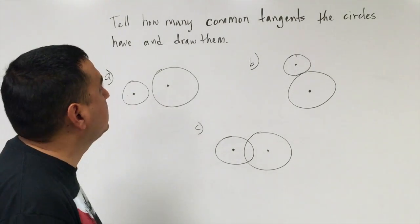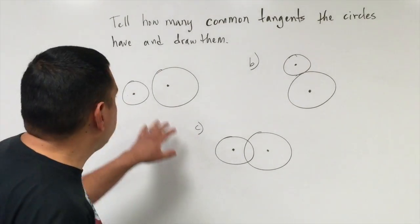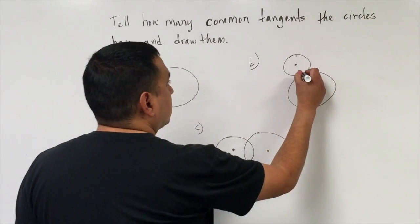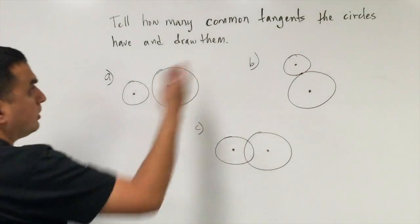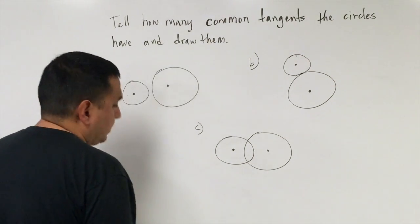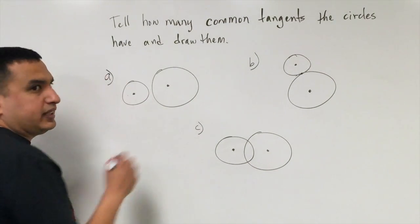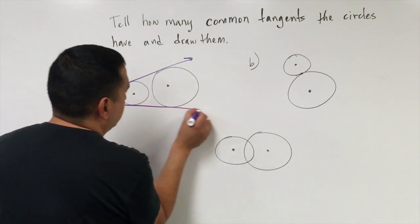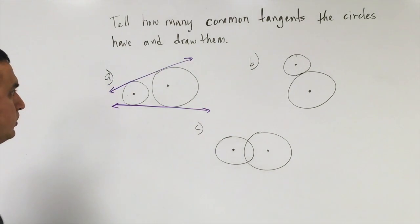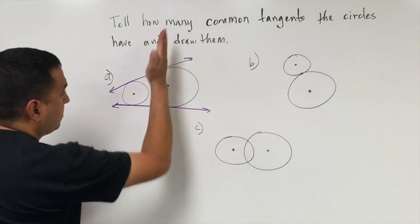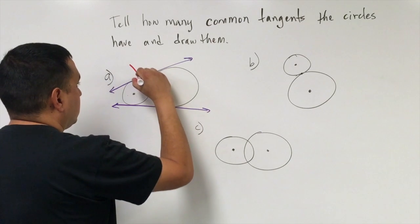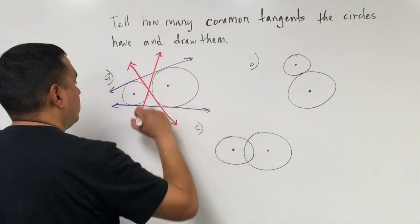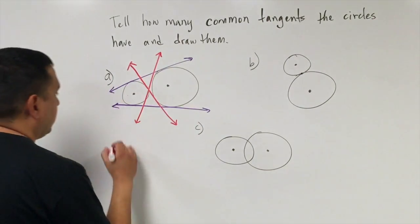This example asks how many common tangents the circles have. With two separate disjointed circles, I can draw two external tangents on the outside and two internal tangents crossing between the circles, giving four common tangents total.